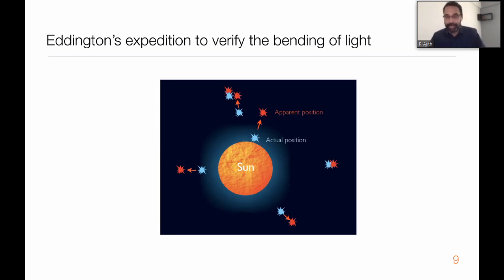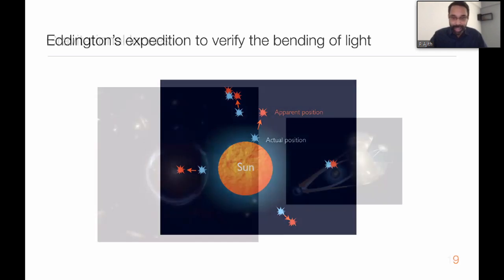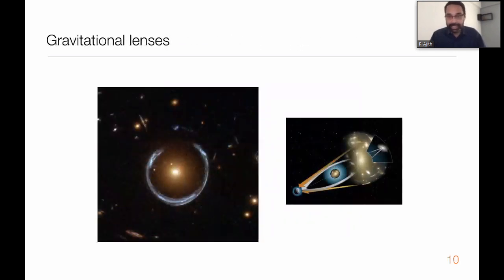These observations match the theory remarkably well, making the first remarkable independent verification of Einstein's theory, which made Einstein a celebrity overnight worldwide. This is called the gravitational bending of light, and it's a very commonplace phenomenon in astronomy today. In fact, we see much more dramatic versions of this, called gravitational lenses, in which gravity is so strong that it basically focuses light rays, thus acting like a lens.